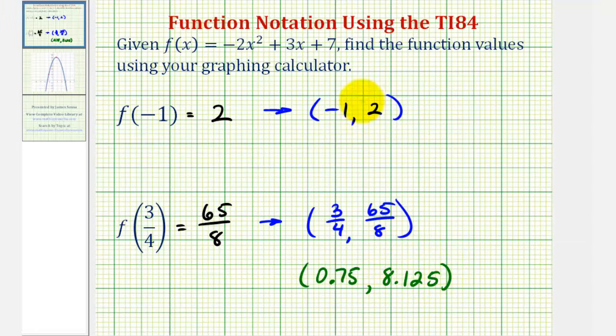Let's verify that these two points are on the given function. Notice the function is a quadratic function, so the graph is a parabola. Since a is negative, the parabola opens down.